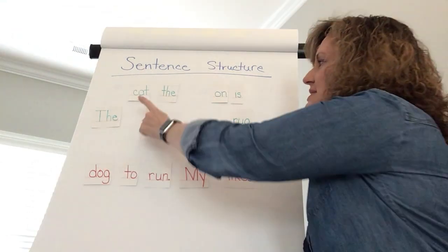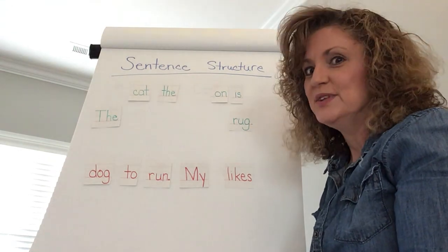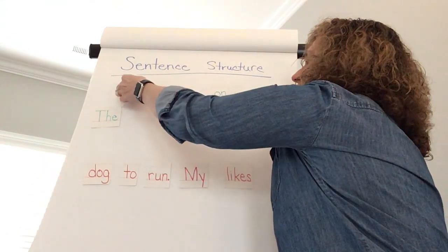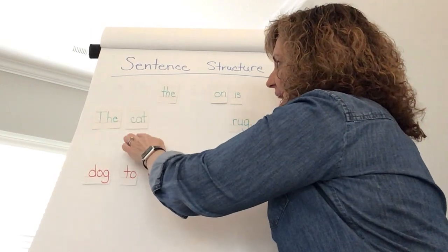So as I look through the rest of my words, cat the on is, well I know that a cat is an animal. So that is going to be the subject of my sentence. So the cat.